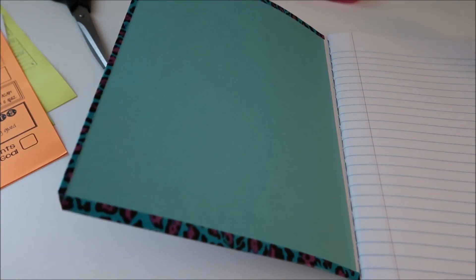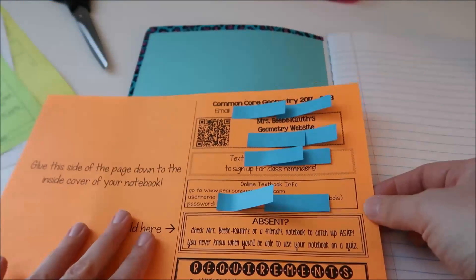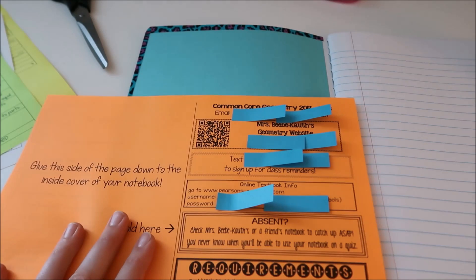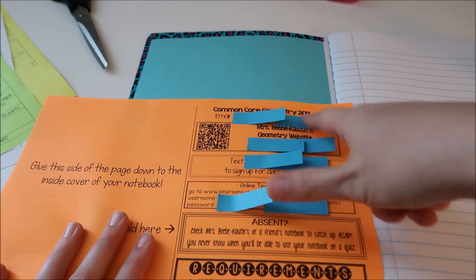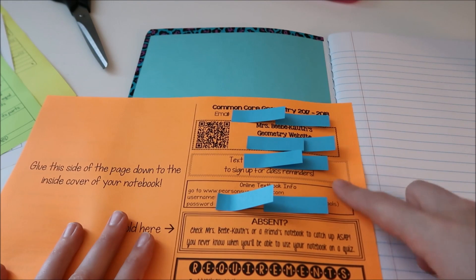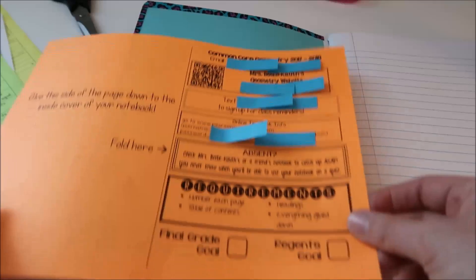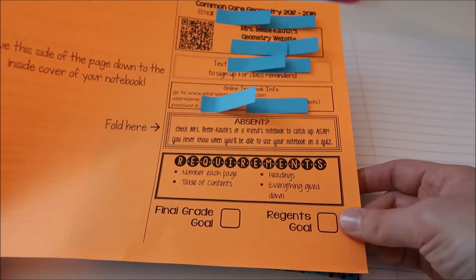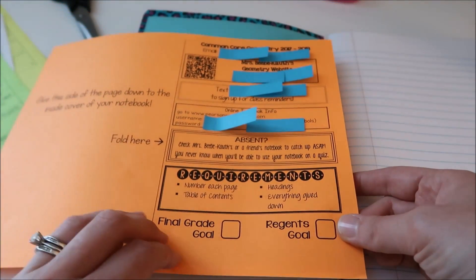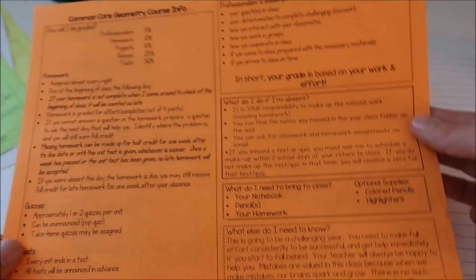For my inside cover I have an interactive notebook version of my syllabus. I have all of my personal information covered but I have the course, my email address, my website, how to sign up for Remind, online textbook information, what to do when you're absent, requirements of the notebook and then goals that my students have for their grades. On the inside I just have everything else that my students need to know syllabus wise.